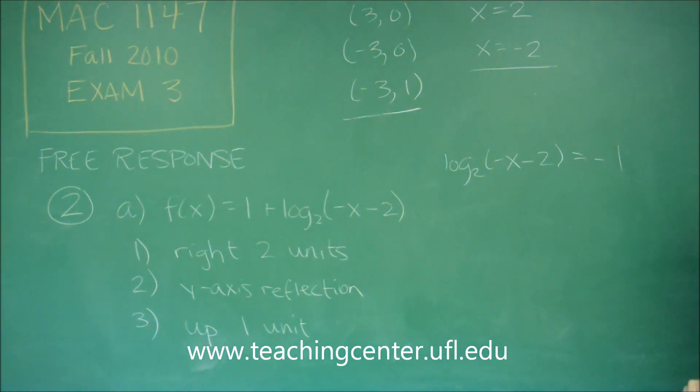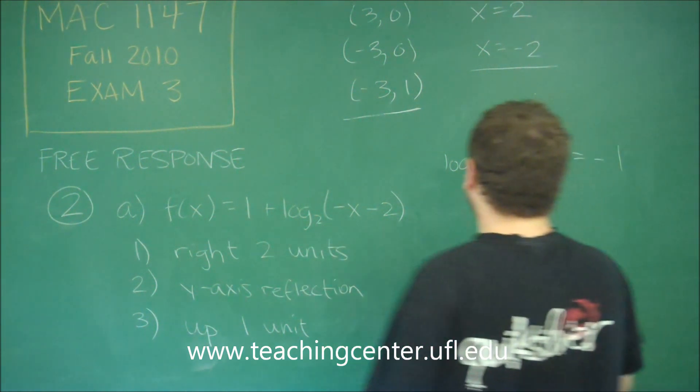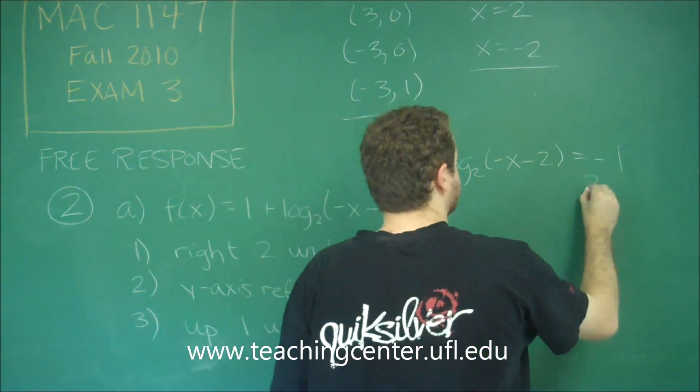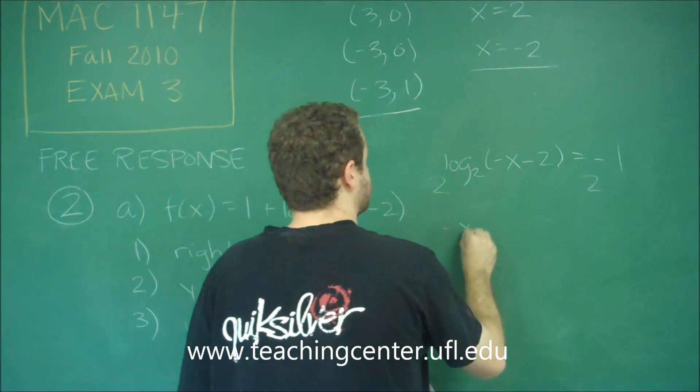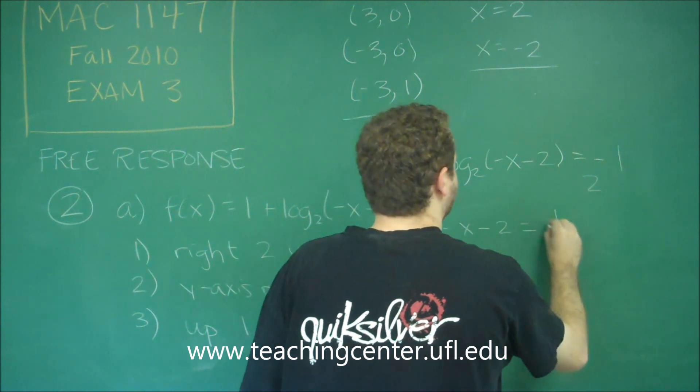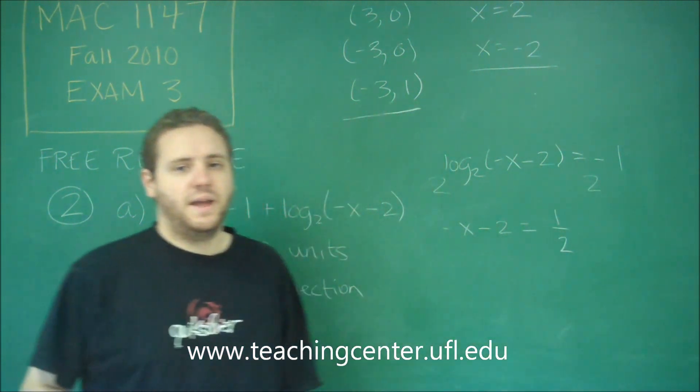If we set this equal to 0 and subtract it to 1 over. Now that each side is a log we can just do 2 to the power of each side to get rid of that. So this is negative x minus 2 equals 2 to the negative 1 power is 1 half.